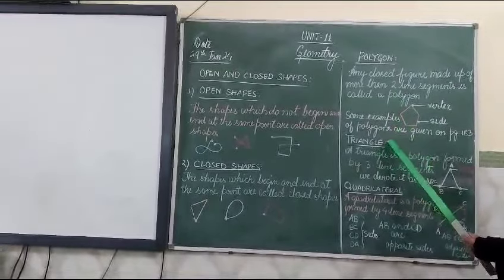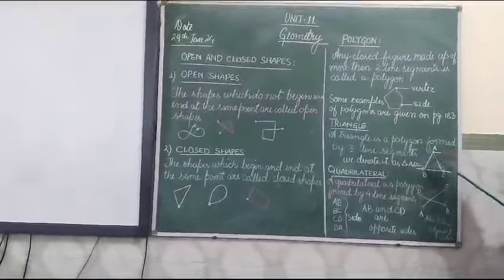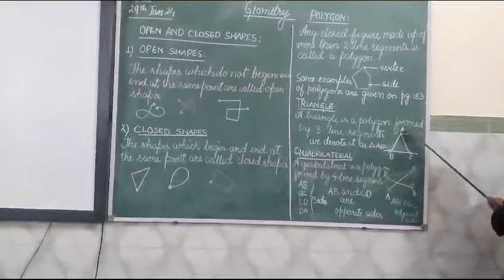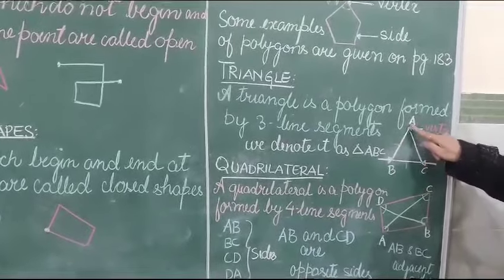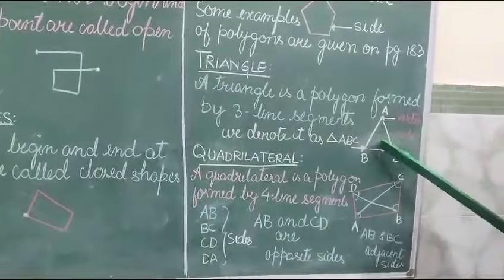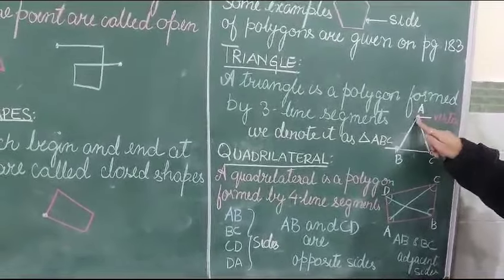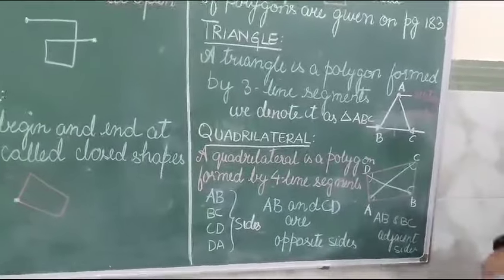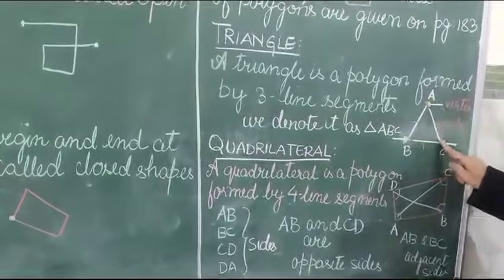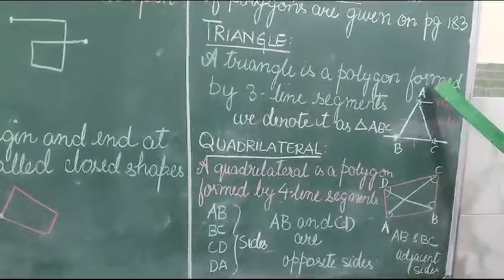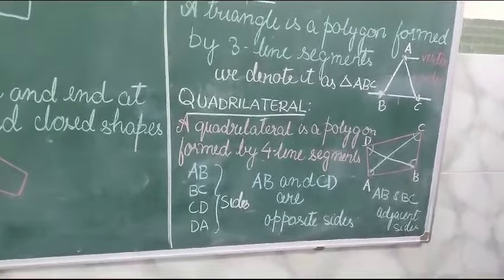Next polygon is triangle. A triangle is a polygon formed by three line segments. You can see the figure of a triangle here — one line segment AB, second BC, and third is CA. The line segments forming the figure are known as sides, and the point where two line segments meet is known as a vertex, or in plural, vertices. We can denote it as triangle ABC, or also BAC and BCA.